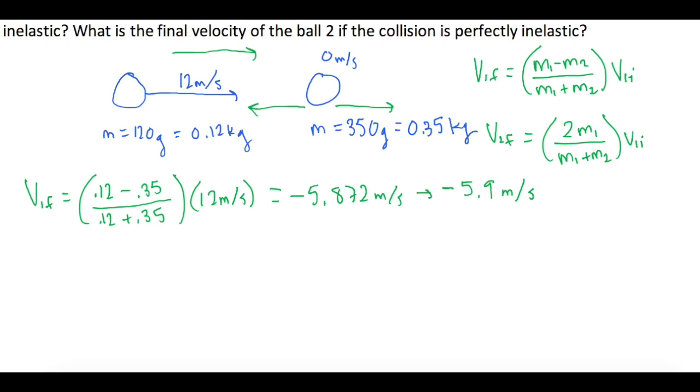The second ball is going to be a positive value because it's going in the same direction as our ball 1 was. Remember, an elastic collision is where they don't stick and they say it's perfectly elastic, so they bounce off each other and go in opposite directions.